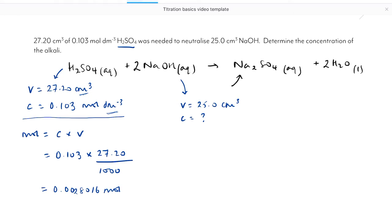How do I work out the number of moles of the alkali? My balanced equation tells me that 1 mol of sulfuric acid reacts with 2 mols of sodium hydroxide. But I haven't got 1 mol of sulfuric acid, I've got 0.0028016. I'm going to have twice as many moles of the sodium hydroxide. So the number of moles equals 0.0028016 times 2, which is 0.0056032.